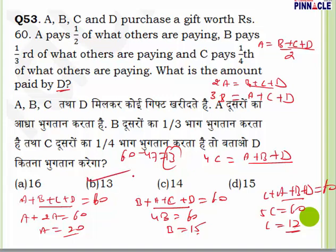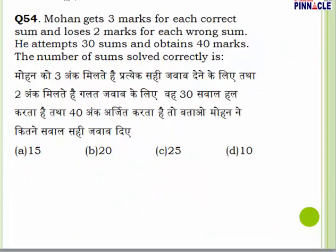What we have done in this question: according to the statement, we rewrote each condition in equation format, then substituted values to find each person's contribution. For such questions, rewriting in this format and then putting values gives the answer efficiently.